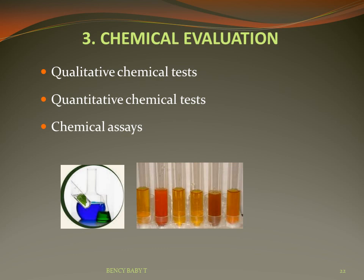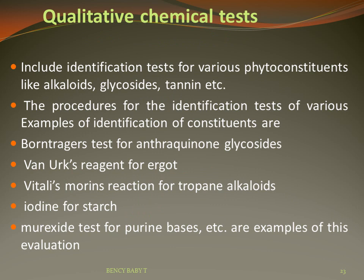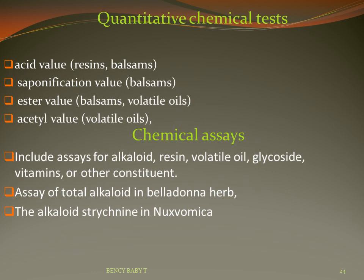Chemical evaluation involves qualitative chemical tests, quantitative chemical tests, and chemical assays. Qualitative tests include identification tests for phytoconstituents like alkaloids, glycosides, tannins, flavonoids, etc. Examples: Borntrager's test for anthraquinone glycosides, Keller-Kiliani test for digitalis glycosides, Vanilin reagent for ergot, Vitali-Morin reaction for tropane alkaloids, iodine test for starch, and murexide test for purine bases. Quantitative chemical tests involve acid value, saponification value, ester value, acetyl value, and chemical assays for alkaloids, resins, volatile oils, glycosides, vitamins, and other constituents.